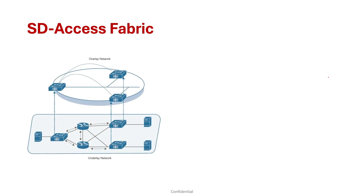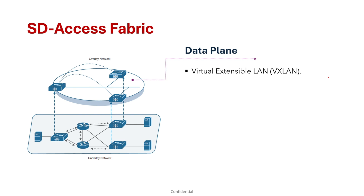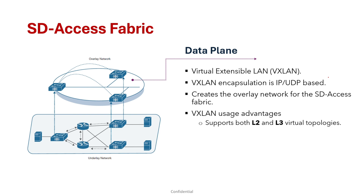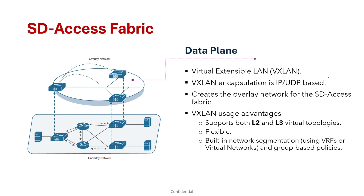The SD Access fabric data plane is based on VXLAN, also known as Virtual Extensible LAN. VXLAN encapsulation is IP/UDP-based and can be forwarded by any IP-based network, creating the overlay network for the SD Access fabric. Using VXLAN brings several advantages: it supports both Layer 2 and Layer 3 virtual topologies, can operate over any IP-based network making it very flexible, and has built-in network segmentation using VRFs or virtual networks and group-based policies.